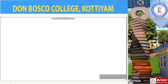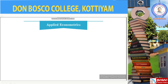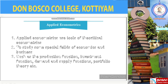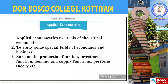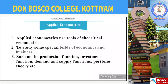Now we will move on to applied econometrics. Applied econometrics is the use of tools of theoretical econometrics to study special fields of economics and business, such as the production function, investment function, demand and supply function, portfolio theory, etc. So these are the two types of econometrics.